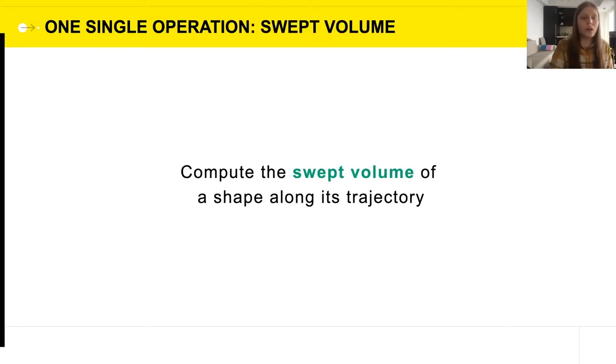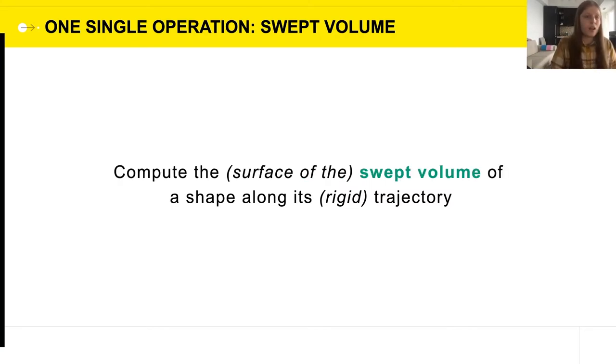We call this the Swept Volume of the shape along its trajectory, and in what follows we'll use the traditional definition of the Swept Volume, where the trajectory is assumed to be rigid. The shape doesn't deform, it only ever rotates and translates. And by the way, since a 3D volume is uniquely determined by a bounding surface, and a surface is usually much easier to compute and lighter to represent and to store than a volume, we'll talk about computing the bounding surface of a Swept Volume as the same thing as computing the Swept Volume.